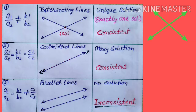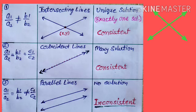In the second case, if all three ratios are equal — that is, a1 upon a2 equals b1 upon b2 equals c1 upon c2 — then on graph paper both lines are coincident lines and there are infinitely many solutions. This pair of linear equations is also called consistent.